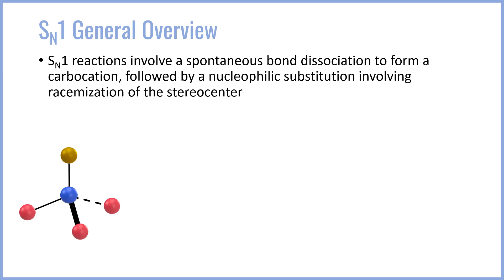For example, let's say we start off with this tetrahedral carbon with the gold sphere representing the leaving group. What will first happen is that the bond from the blue atom, the carbon, to the gold atom, the leaving group, will spontaneously break.